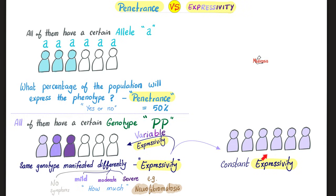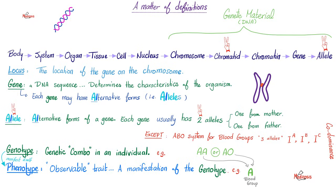Expressivity could be constant — everybody is the same — or variable, where some people have no manifestation or no symptoms, others have mild symptoms, some have moderate symptoms, some have very severe symptoms. An example is a disease known as neurofibromatosis. It's called neuro because it affects the brain; fibroma are tumors usually found on the skin; and osis means condition. So it's a condition that affects your nervous system and your skin. These definitions were also discussed in the previous video. Please pause and review.